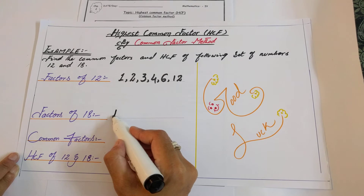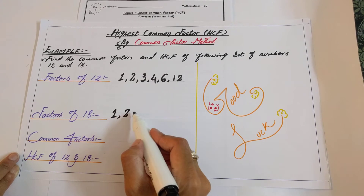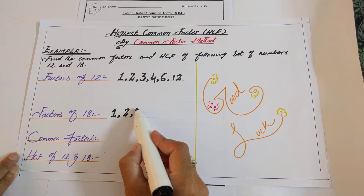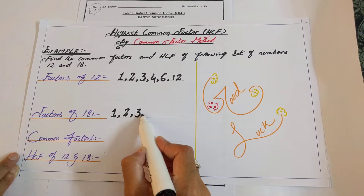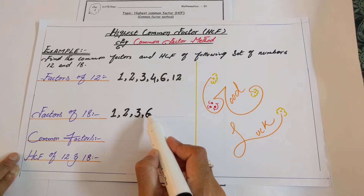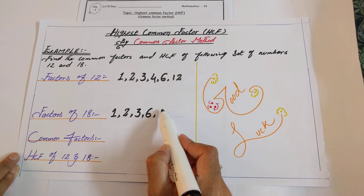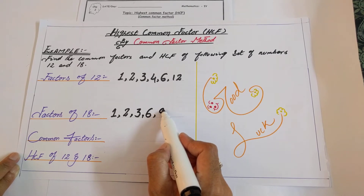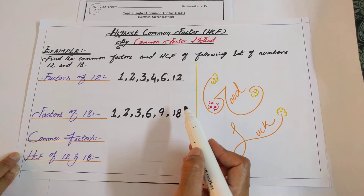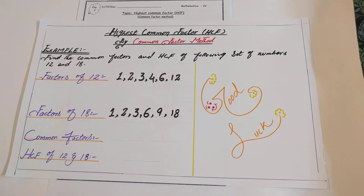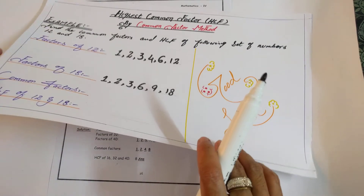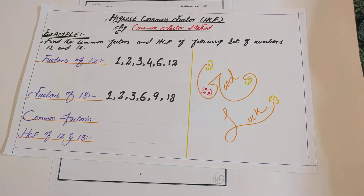Now find the factors of 18. Factors of 18 are 1, 2, 3, 6, 9, and 18 — because 1×18=18, 2×9=18, 3×6=18, and so on. These all divide 18 completely.